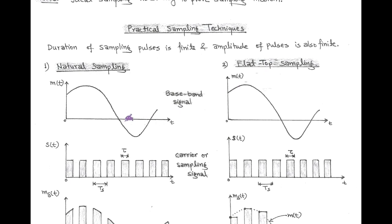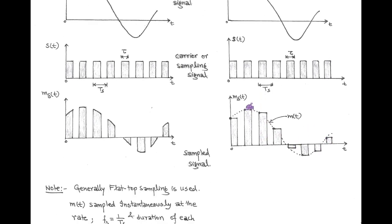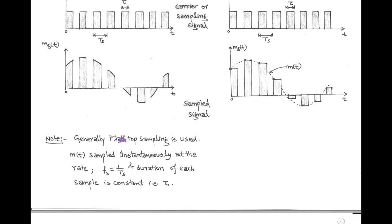In natural sampling, the constant amplitude of the carrier signal is changed according to the modulating signal, as shown in the figure. But in case of flat-top sampling, the amplitude of each pulse in the sampling signal varies according to the baseband signal. But here, the top remains flat with the help of a sample-and-hold circuit. And in practice, generally flat-top sampling is used. Here, the modulating signal is sampled instantaneously at the sampling rate, and the duration of each sample is constant, that is tau.